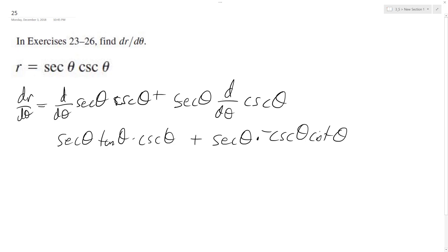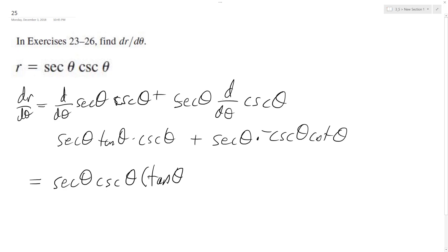So if you look at both of these, they both share a secant theta and a cosecant theta, so we can factor that out, and we end up with secant theta cosecant theta times the quantity tangent theta minus cotangent theta.